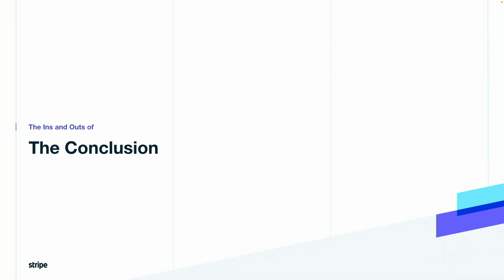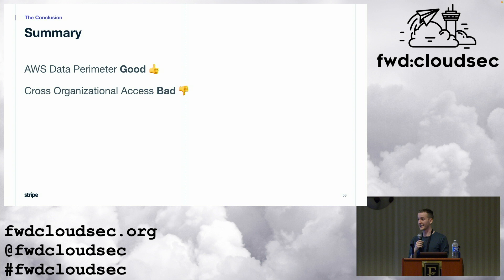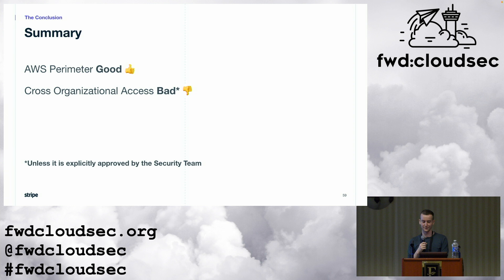That's everything I had for you. We went over what the AWS data perimeter is, three of its controls, and how to set those controls up safely. The AWS data perimeter is good. Cross-organizational access is bad, unless it's explicitly approved by the security team. Stripe has found that these controls are unreasonably effective for the amount of effort they take to set up, and so we thought we'd share what we learned along the journey of deploying them. Thank you.